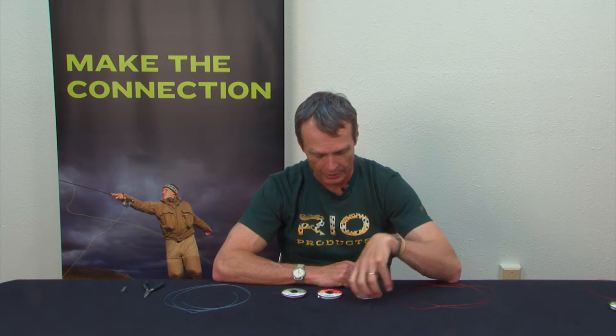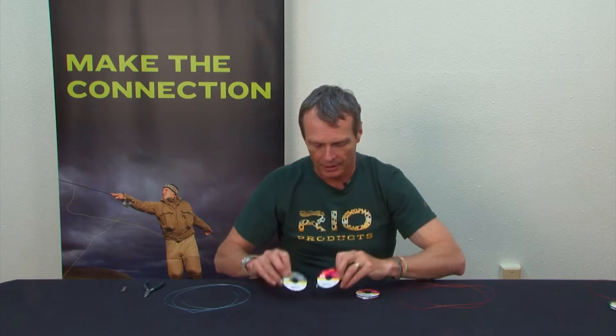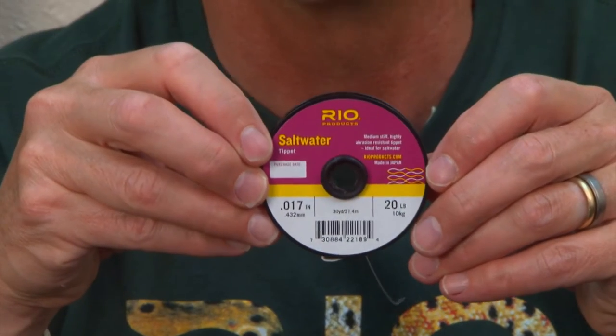Today we're going to look at the Slim Beauty. Slim Beauty is a very neat, very strong joining knot for different diameter materials. You can use it for joining hard shock tippets or wire bite type tippets to your regular leader material. This is 20-pound saltwater material. Really it's a join for contrasting sizes, very neat, very easy to do and strong.